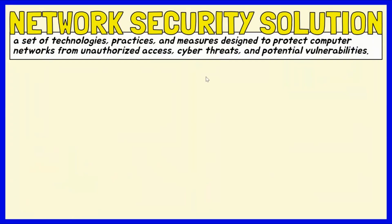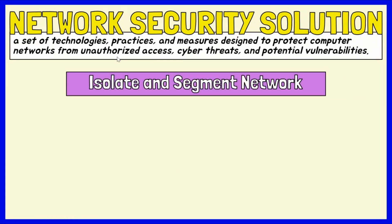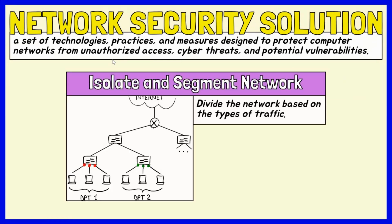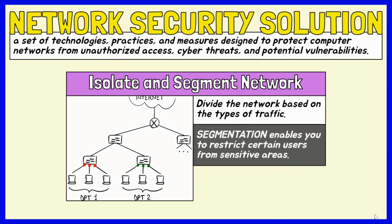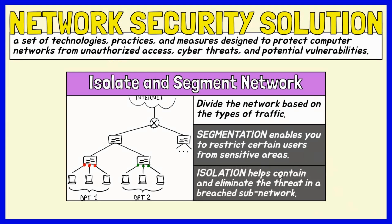Now let's delve into some network security solutions. Isolating and segmenting networks: rather than viewing your network as a single unit, divide it based on the types of traffic. Segmentation enables you to restrict certain users from sensitive areas. Isolating a breached sub-network helps contain and eliminate the threat, allowing normal operations in other areas to continue without disruption.